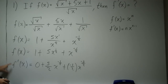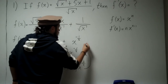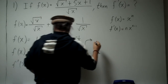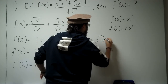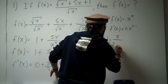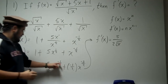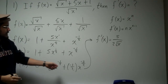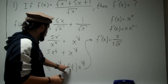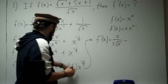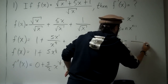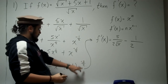The calculus part is done — now we do some algebra. The 0 term drops out. Bringing x to the negative 1 half down, we now have f prime of x equal to 5 divided by 2 square root of x — since x to the 1 half is the square root of x — minus 1 over 2 x to the 3 halves.